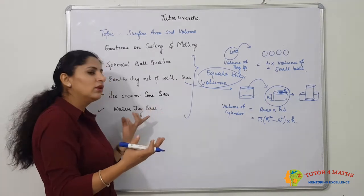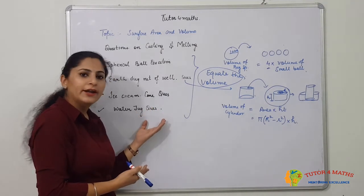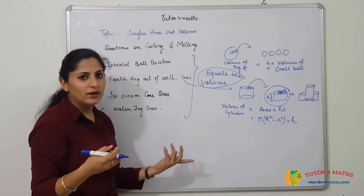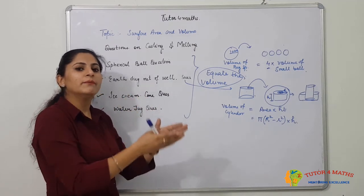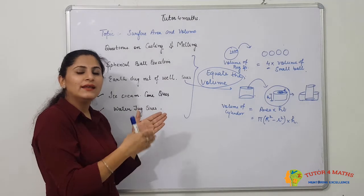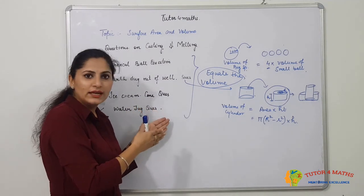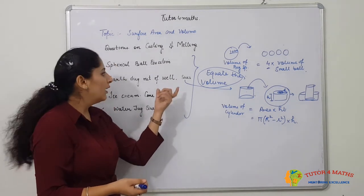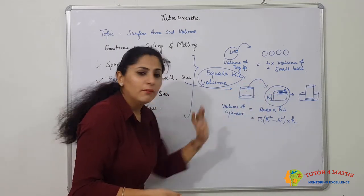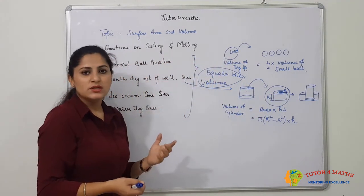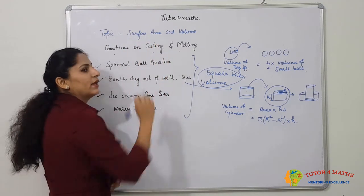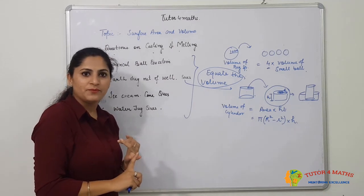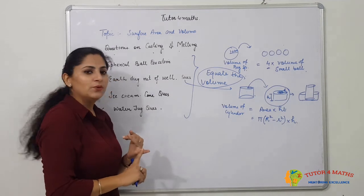For water-filled cuboidal or cubical tanks, how many cylindrical pipes will be filled — pipes are cylindrical, so we equate the volume. The tip for all casting, melting, or recasting questions is: equate the volume of the original figure to the volume of the new figure, whether it is a cylindrical pile, conical cone, ring-shaped embankment, or spherical ball.